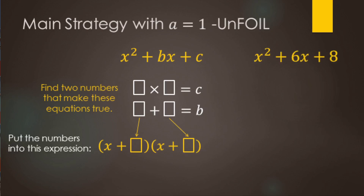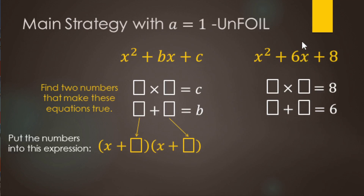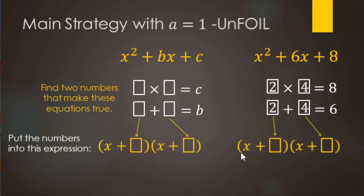Here's an example: x squared plus 6x plus 8. We're looking for two numbers that multiply to 8 and add to 6. That's going to be 2 and 4 — 2 times 4 makes 8 and 2 plus 4 makes 6. So those two numbers go in the blanks and we have x plus 2 and x plus 4.